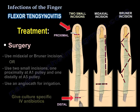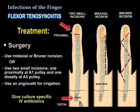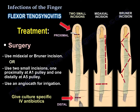Use a mid-axial or Bruner incision, or you can use two small incisions — one proximally at the A1 pulley and one distally at the A5 pulley. Use an angiocath for irrigation, and give culture-specific IV antibiotics.